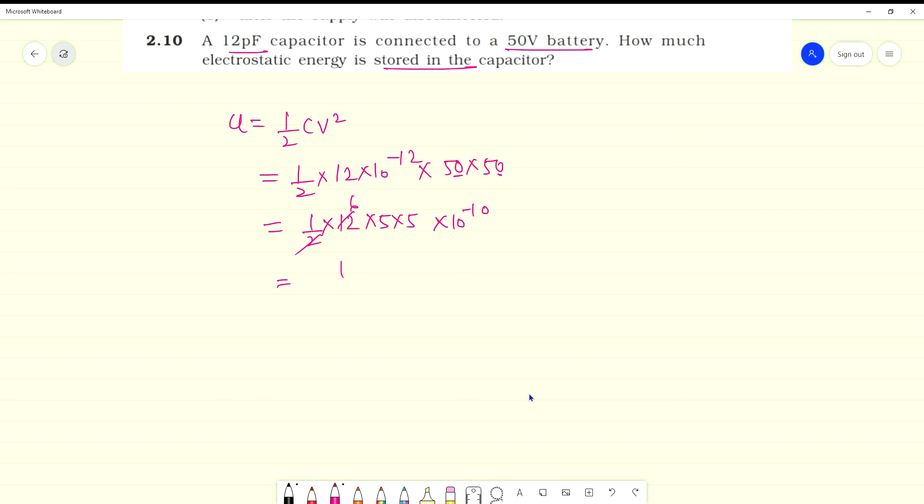Now we have 150 into 10 raise power minus 10, which we can write as 1.5 into 10 raise power minus 8 joule. So hopefully this will help you. Thank you.